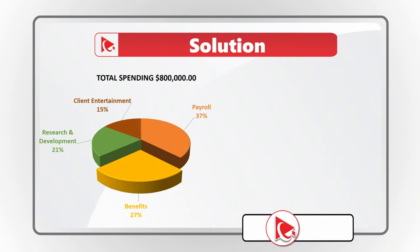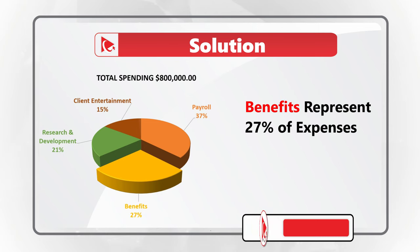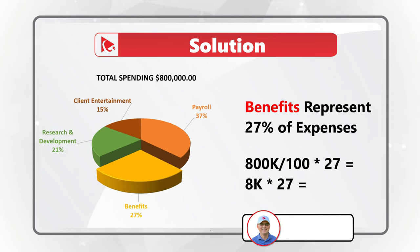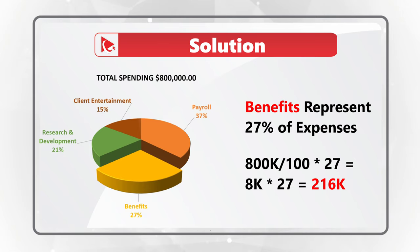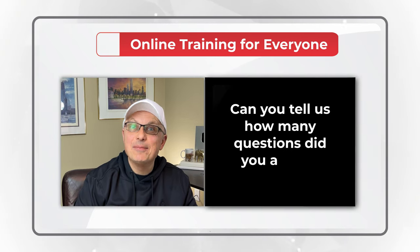First, identify the benefits segment in the chart — benefits represent 27% of all expenses. To calculate the amount, divide $800,000 (total expense) by 100 and multiply by 27: 8,000 multiplied by 27 equals $216,000. The correct choice is B, $216,000.